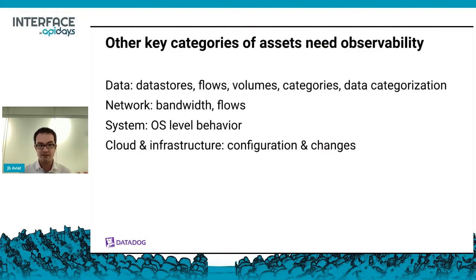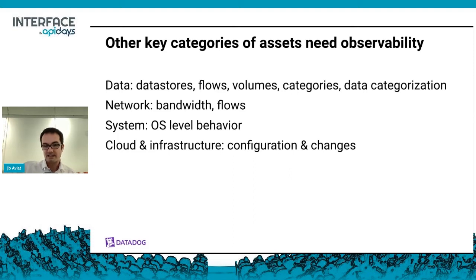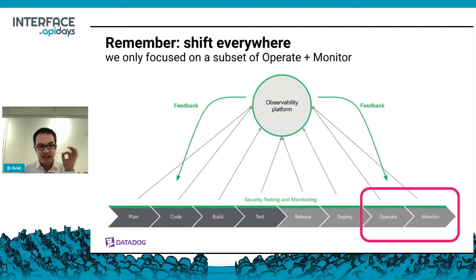You have other key categories of assets in production that need observability — like data stores, data flows, data volumes (how much data is an actor pulling from one service), and data categorization (is it marketing information or pay-slip information?). What about the network — bandwidth, flows? OS-level behavior is critical if you want to see an attacker pivoting or trying to find persistence. Cloud and infrastructure configuration and change information is also extremely relevant from a security standpoint.